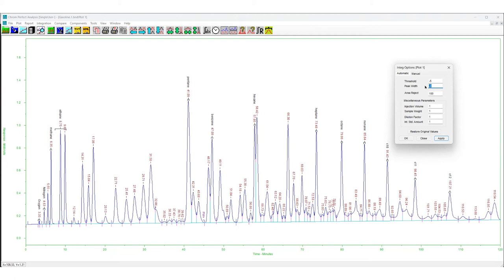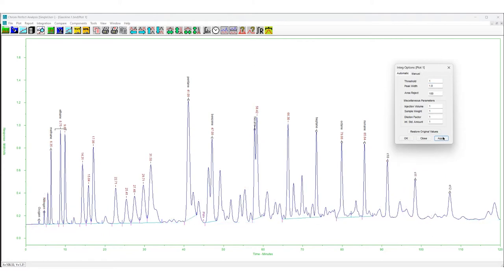Peaks that are much wider than the peak width parameter may or may not be detected. Wide peaks that only slightly exceed the threshold are usually not detected, but large, wide peaks that greatly exceed the threshold are often detected regardless of the peak width setting. Therefore, when the signal-to-noise ratio is large, the peak width setting is not critical.